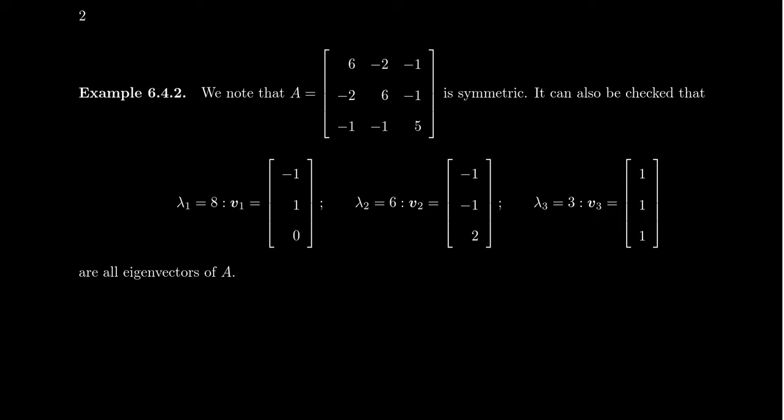So you can see this 3x3 matrix up here, A, which is symmetric. As you swap positions on the diagonal, you get the exact same matrix again. And it can be shown that the eigenvalues of this matrix A are 8, 6, and 3. There's a calculation involved there. You'd have to compute the characteristic polynomial and factor it, but that can be done. And you can also check that with each of these eigenvalues, their corresponding eigenvectors will be negative 1, 1, 0, negative 1, 1, negative 1, 2, and 1, 1, 1.